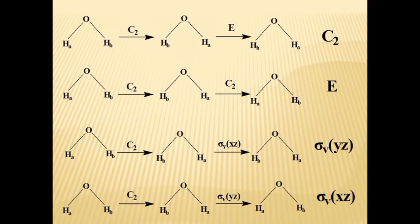C2 followed by σV(XZ): σV(XZ) does not change the molecule in any manner, so the result seems as if only C2 was applied, giving σV(YZ). When C2 is operated followed by σV(YZ): C2 rotates so A takes the position of B and B takes the position of A, then followed by reflection, they are brought back to their initial positions. Since E is already there in the row, the result will be σV(XZ).